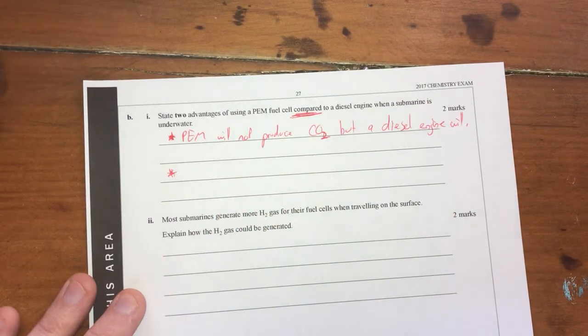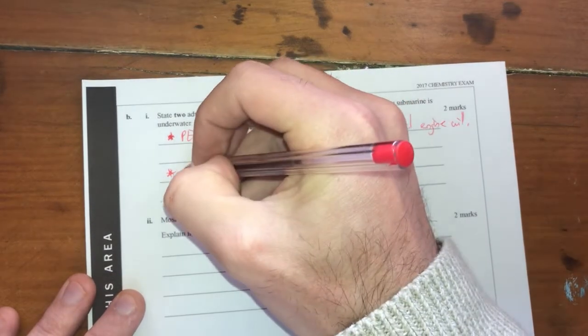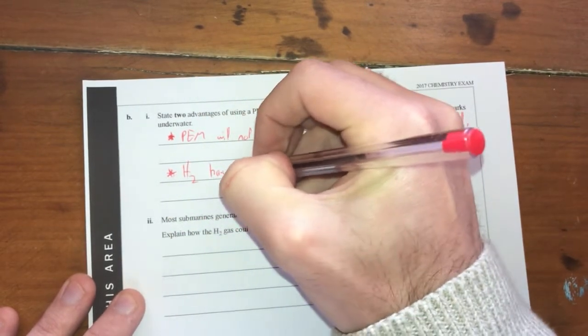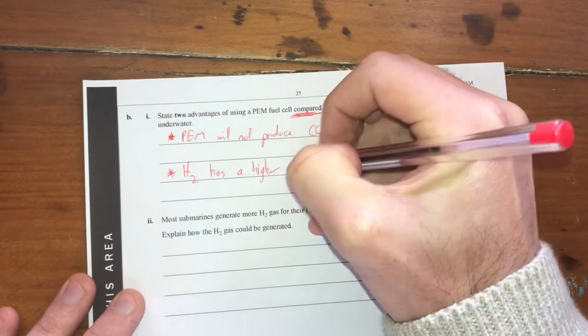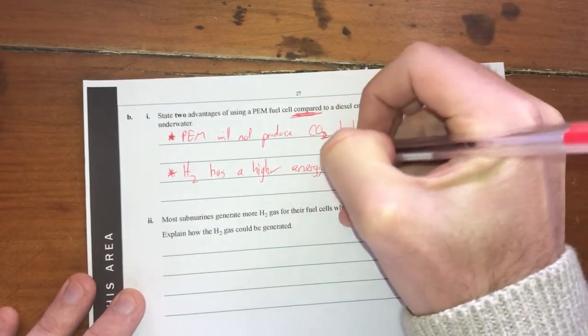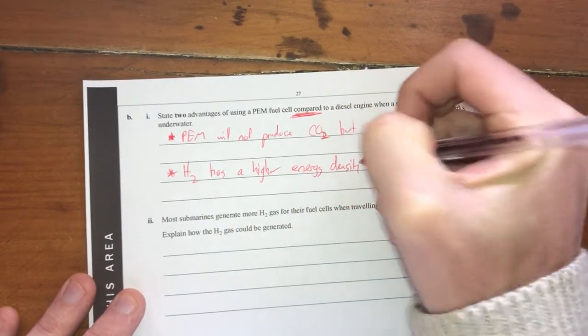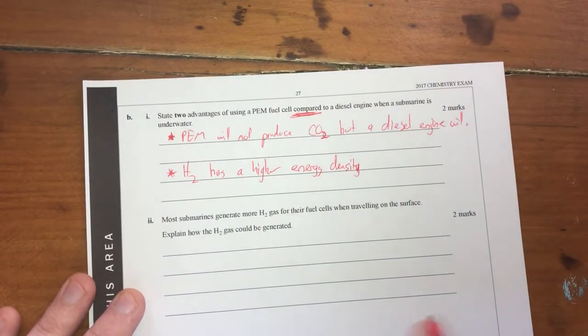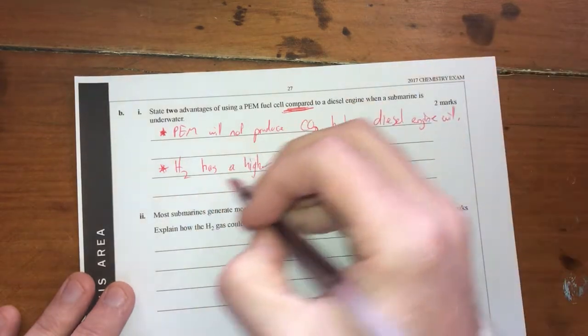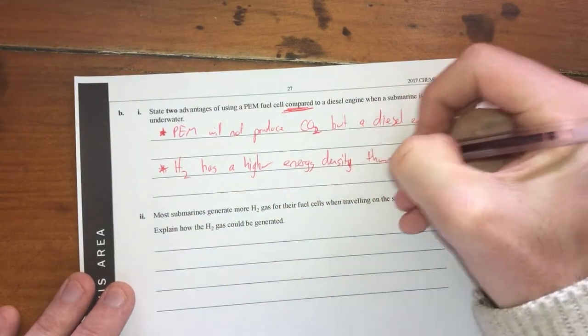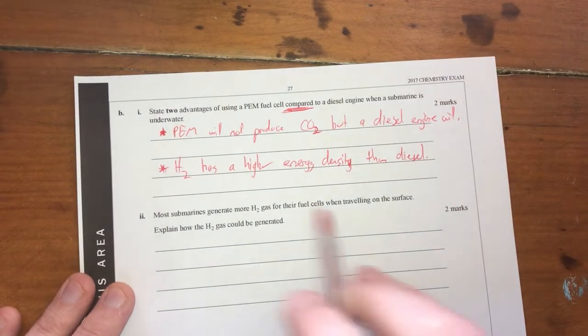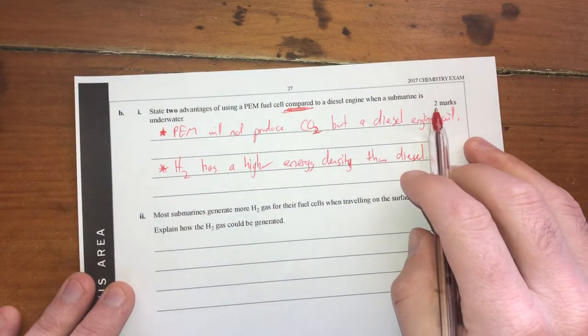What else is a good thing about a PEM? Lots of things, really. Hydrogen is very energy dense. So H2, it has a higher energy density. You can clearly see that from our data booklet if you really want to, but you should know that hydrogen definitely packs a hole, but a lot more punch than diesel does. It's a higher energy density than diesel. So therefore, that's one aspect of it. There's a whole bunch of other things, but I've got two marks here already.